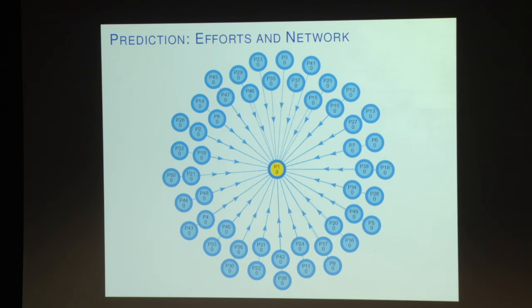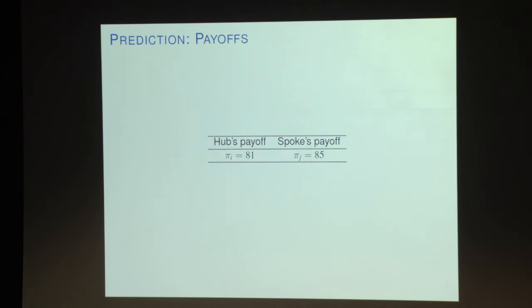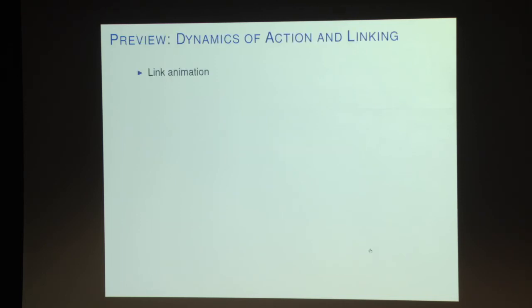The equilibrium payoffs will be very similar for the hub and the spoke — roughly 80. It's 85 for the spoke and 81 for the hub, so the hub is earning slightly less. Now I'm going to give you a sense of what happens in this experiment before summarizing the results.